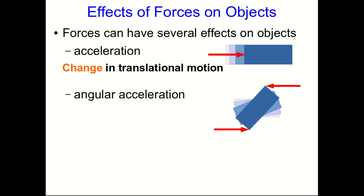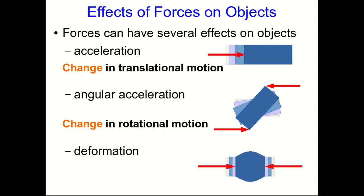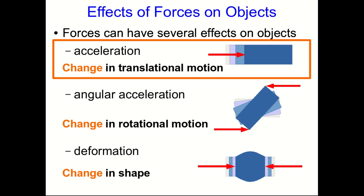But even when the vector sum of forces is zero, if the forces aren't lined up with each other, they can cause the object to accelerate angularly, or in other words, to change its rotational motion. Also, forces can cause objects to be deformed, which is a change in shape. So we're largely going to be concerned with how forces cause things to accelerate. We've already seen changes of state, like deformation, and other changes of state such as warming up due to frictional forces, and we'll continue to look at that.